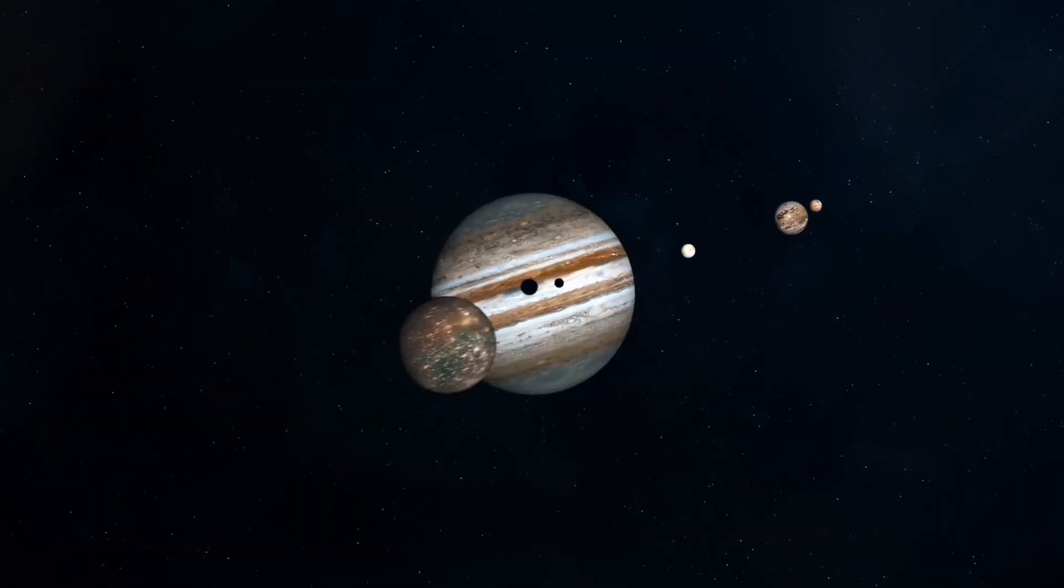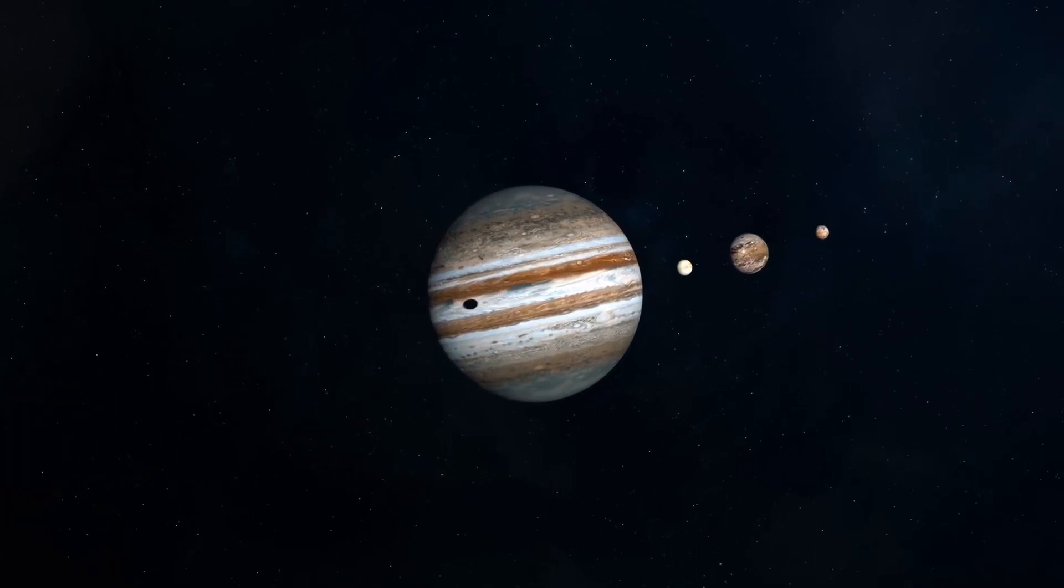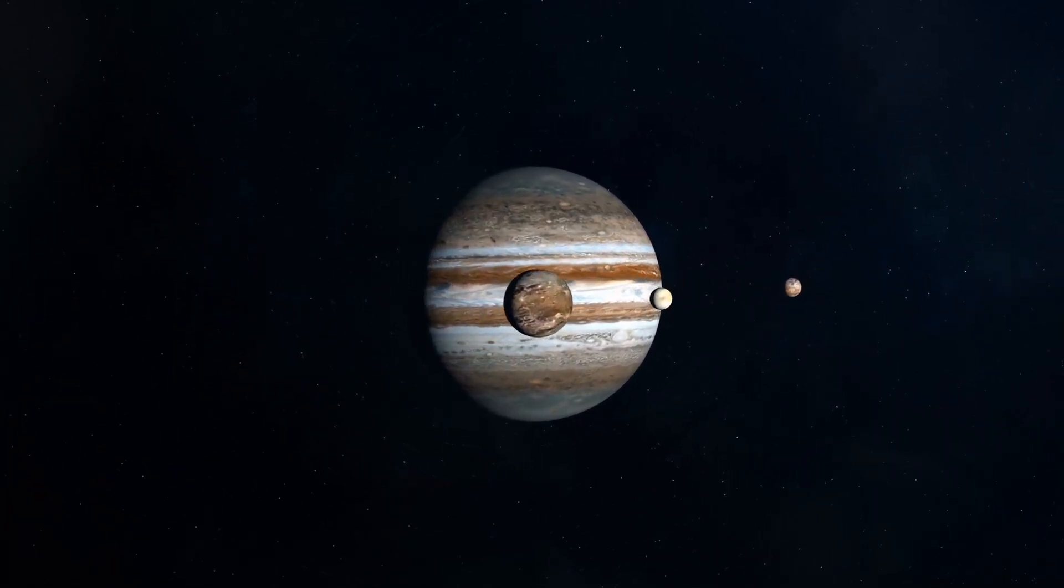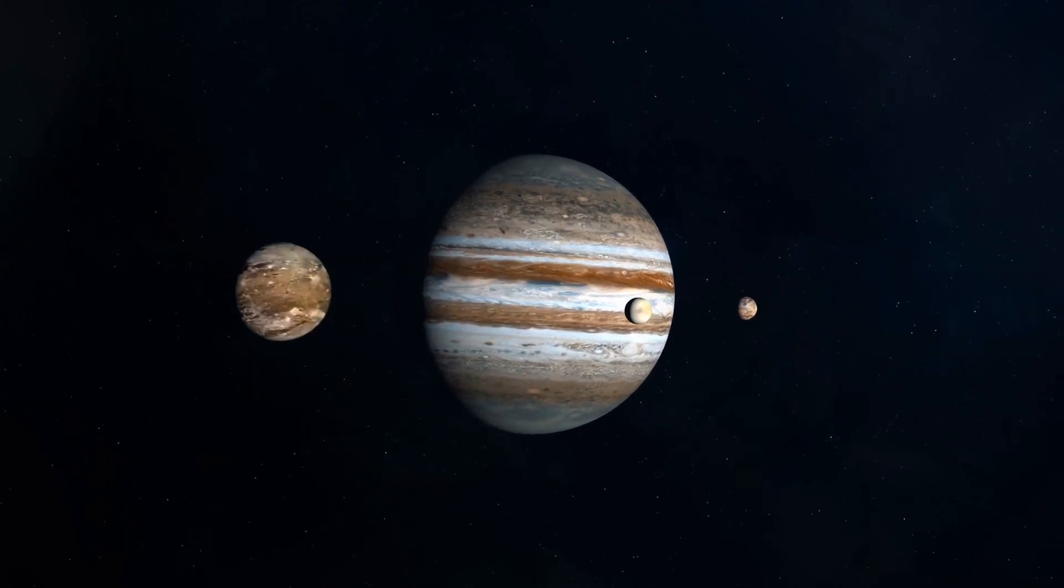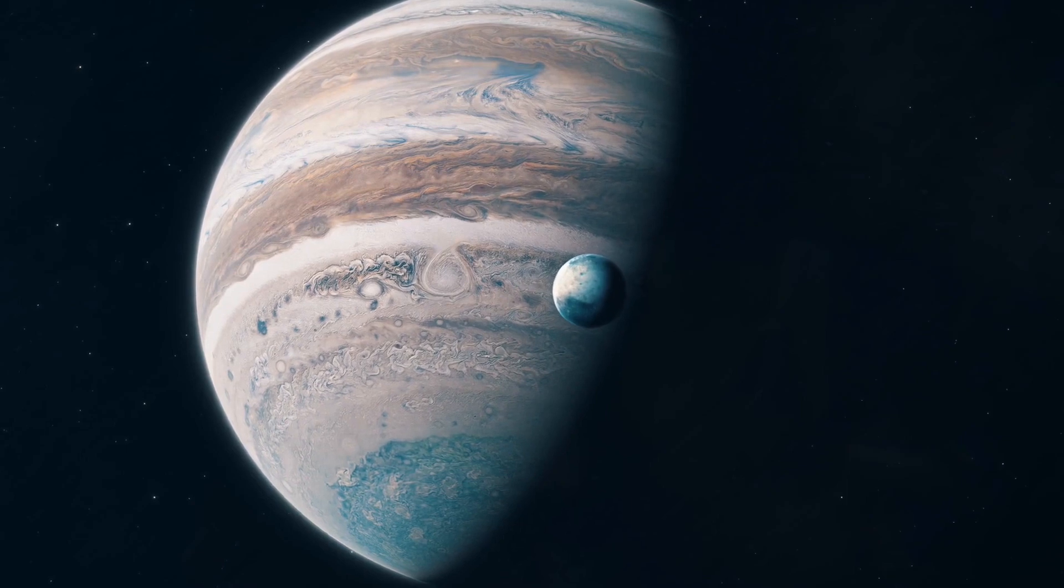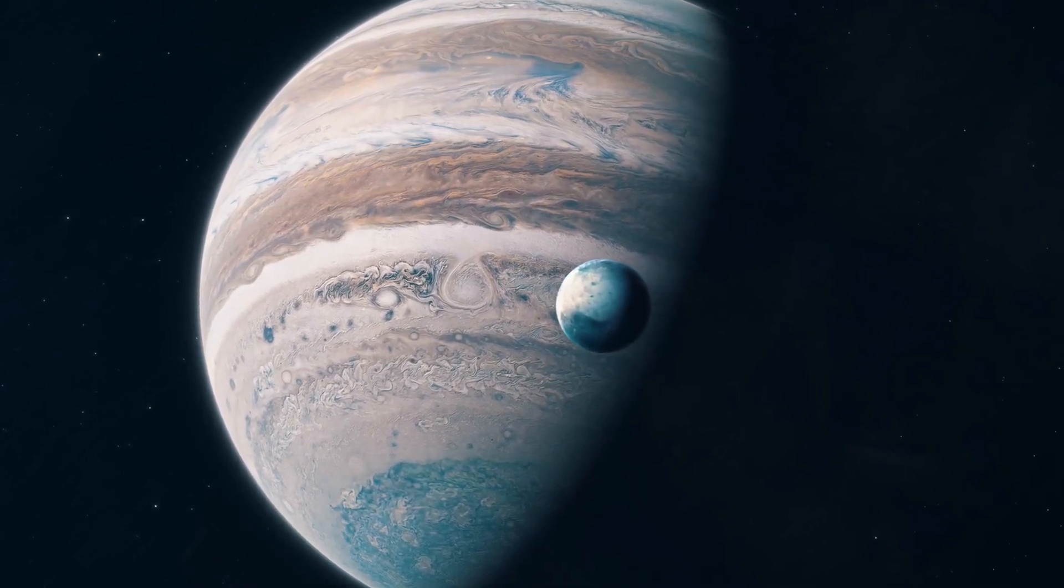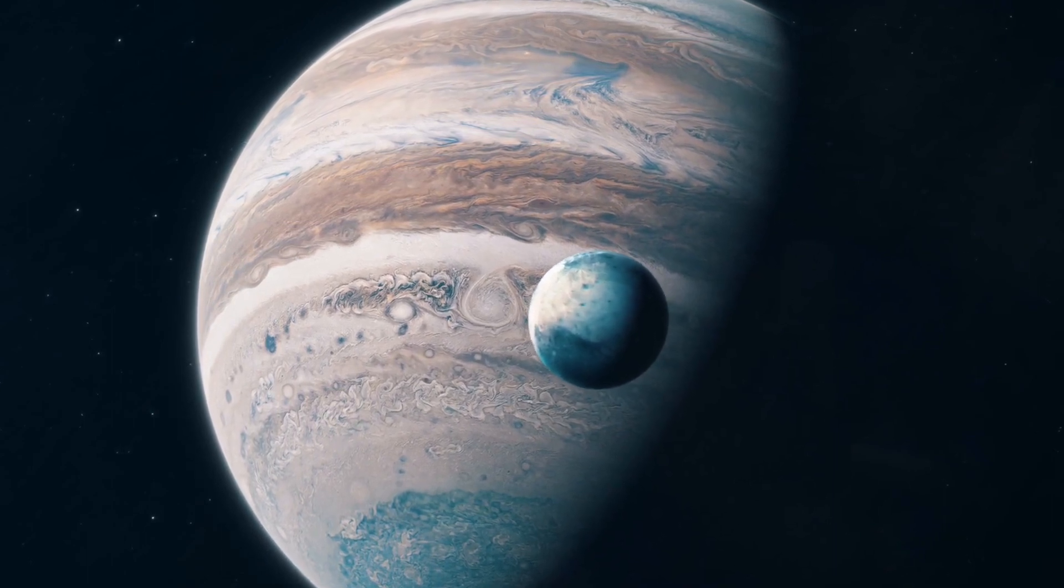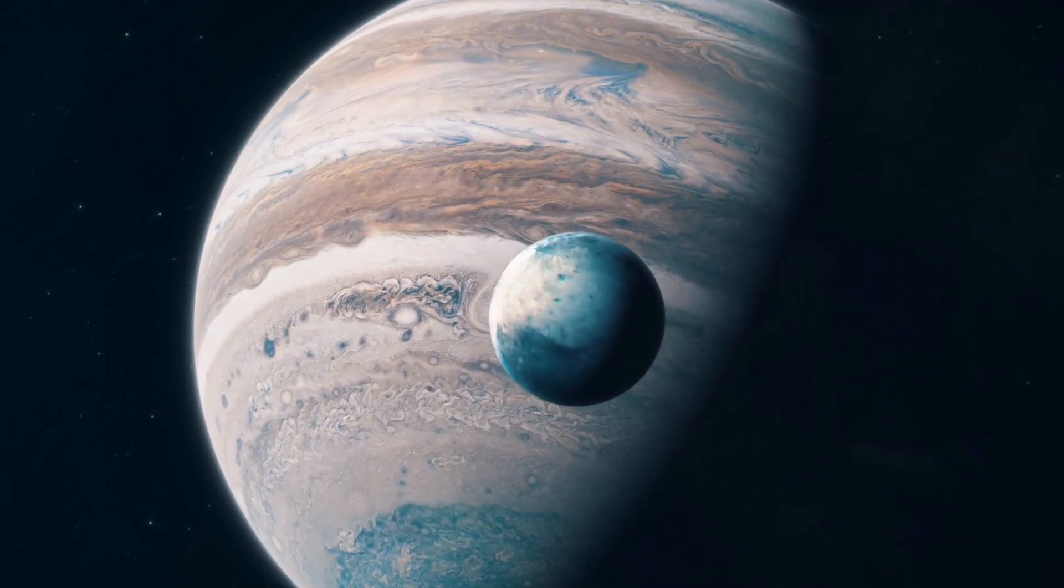Moons are natural satellites that orbit around planets. They are smaller than planets and often have rocky or icy surfaces. Earth has just one moon, but other planets in our solar system have multiple moons. For example, Jupiter has over 90 moons.